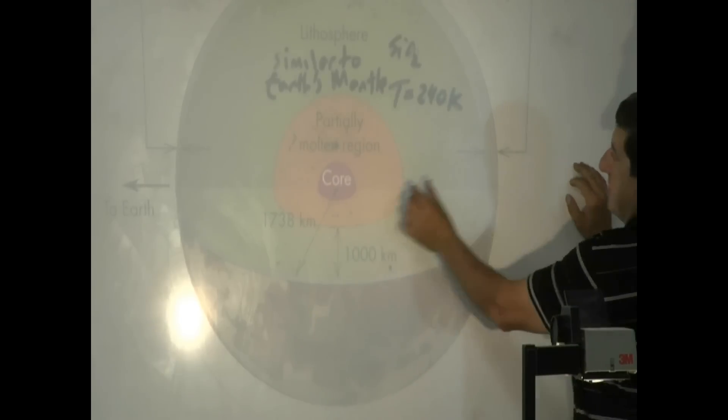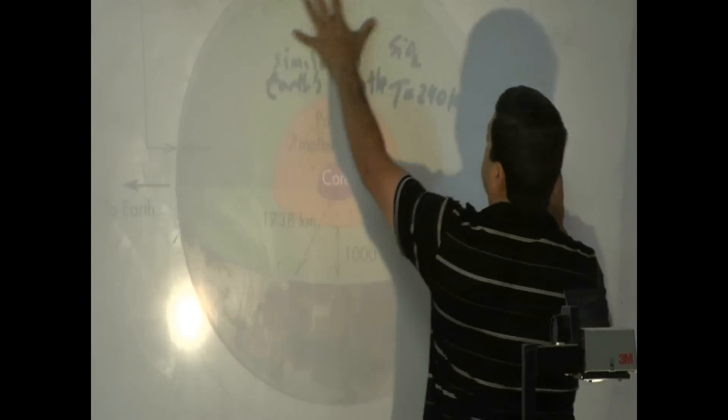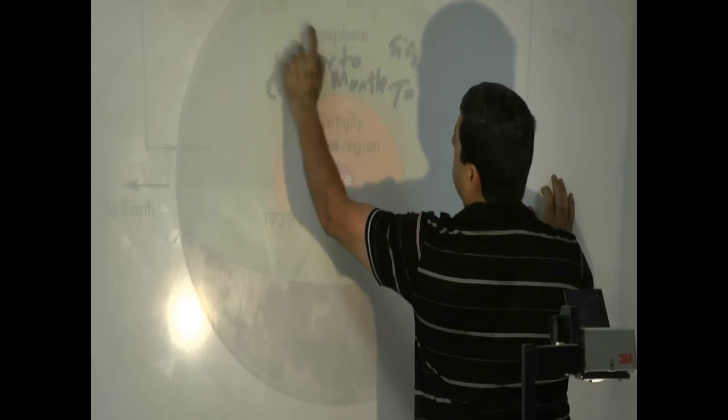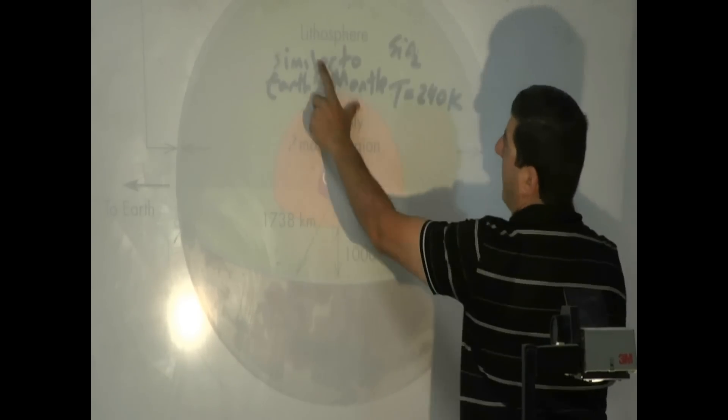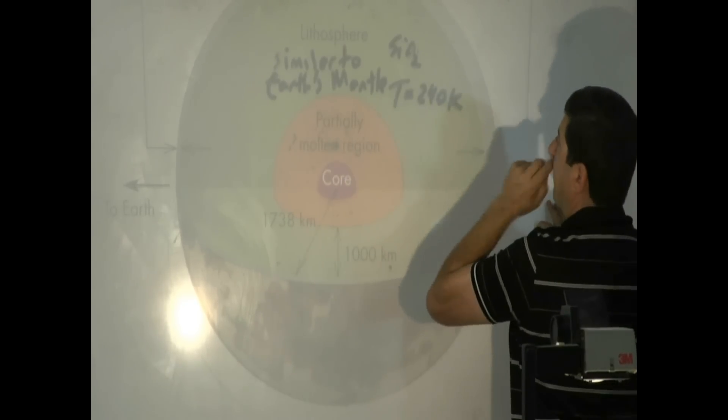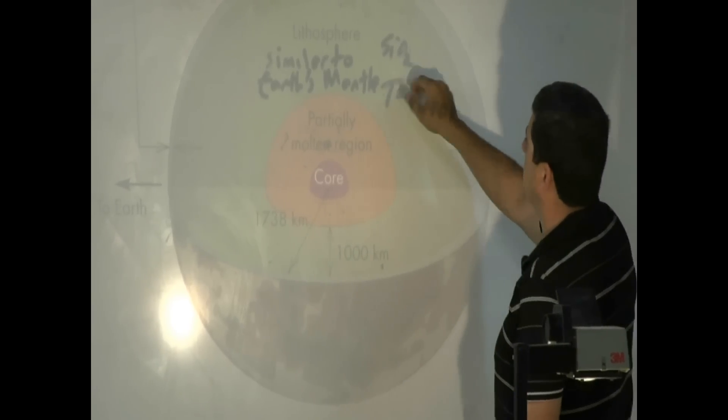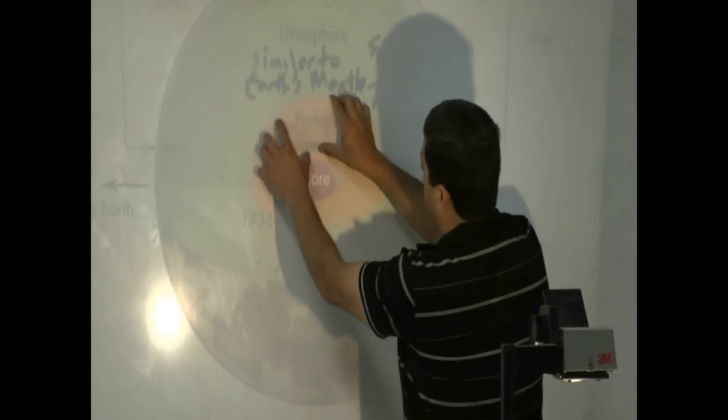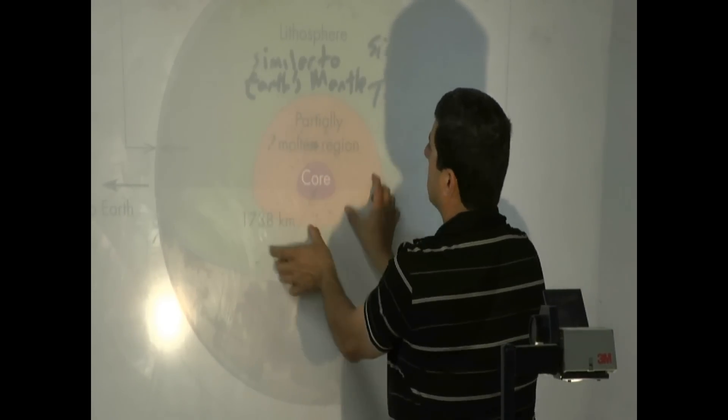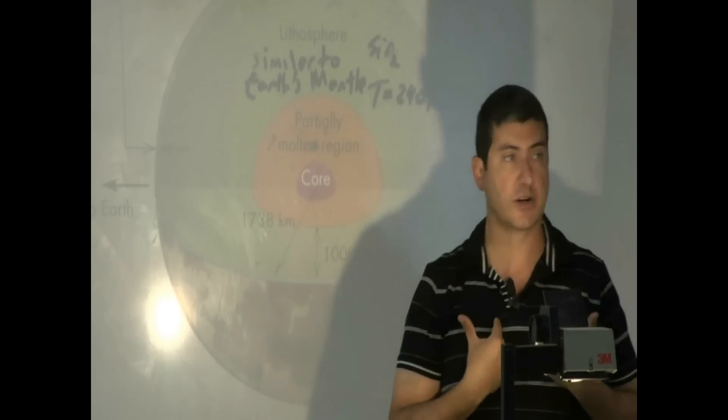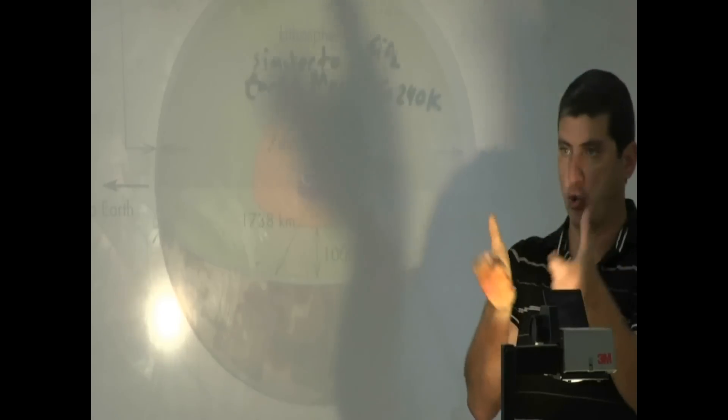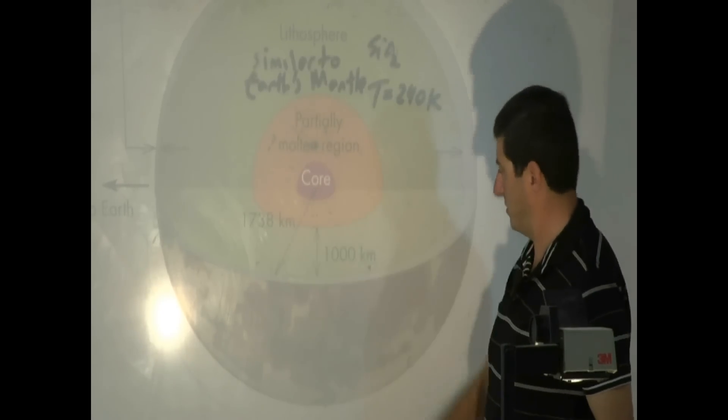It's got the crust. It's got the lithosphere, which is kind of like our mantle, similar to Earth's mantle, but it's a lot colder, temperature 240 Kelvin. It's got silicon oxide. Then it's got a partially molten region, kind of similar to our liquid outer core. Then it's got the core.